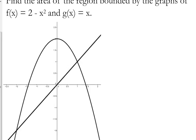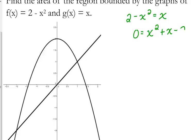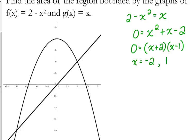In example 2, all they do is give us the two functions: 2 minus x squared and x. So we've got to figure out the bounds. It's pretty obvious on the graph that it's at negative 2 and 1, but they're not going to give you the picture. So you've got to realize these two functions are going to intersect — let's find out where. Set them equal to each other to find our bounds. It's a quadratic, so it's got to equal 0. I don't like a negative x squared, so I'm going to move everything to the right side: positive x squared plus x minus 2. We factor to get x plus 2 times x minus 1, so these two curves intersect at negative 2 and positive 1.